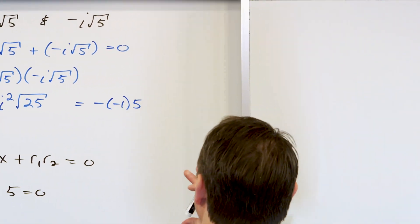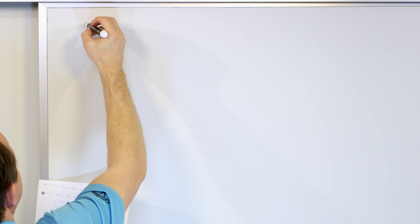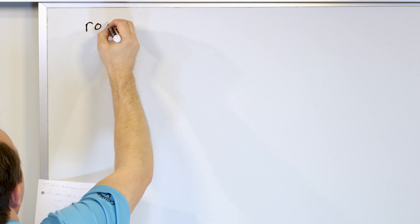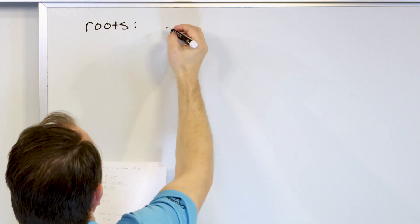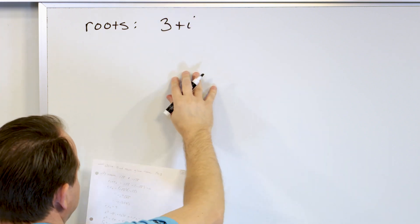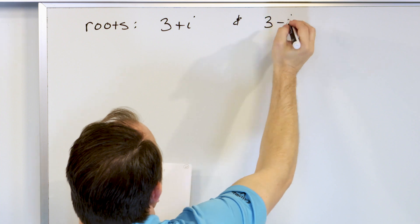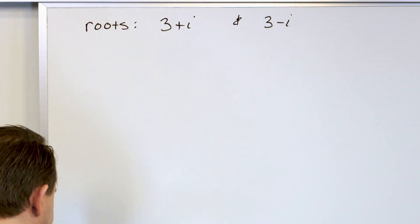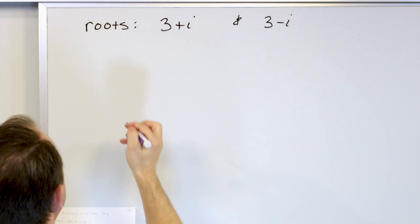That was a situation with purely imaginary roots. Now what if we had complex roots? Complex means you have real plus imaginary parts. We have one root that's 3 plus i and the other root is 3 minus i, and we want to find an equation with integral coefficients that has those roots.